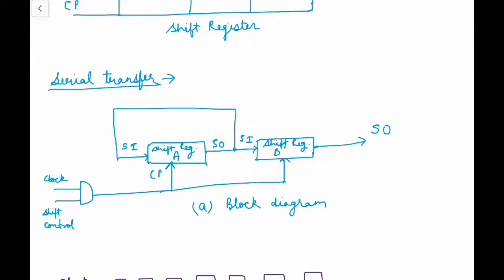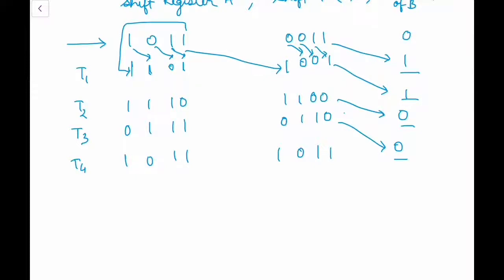Whatever the value of register B, it shifts to the output one bit at a time with each clock pulse CP, and register A's content transfers to register B after 4 clock pulses. From this example we can easily understand the difference between serial and parallel modes of operation. In serial mode, the register has a single serial input and a single serial output — information is transmitted one bit at a time while the registers are shifted in the same direction.